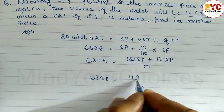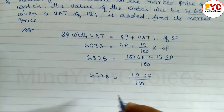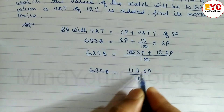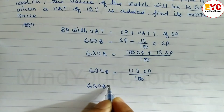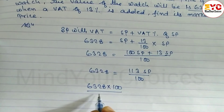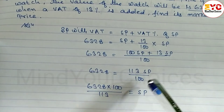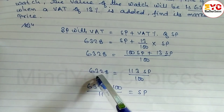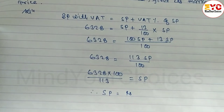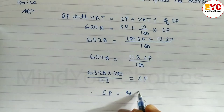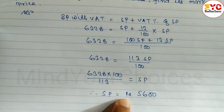So 6,328 is equal to when you add these two we get 113 SP. So we write 113 SP divided by 100. Now we cross multiply: 6,328 into 100 divided by 113 is equal to SP. Therefore SP is equal to rupees 5,600. That is our selling price.